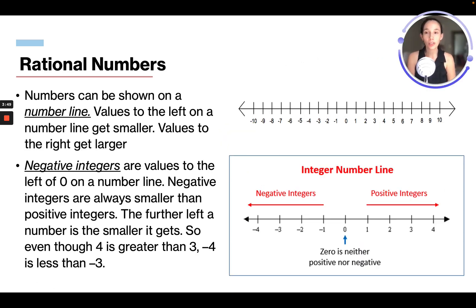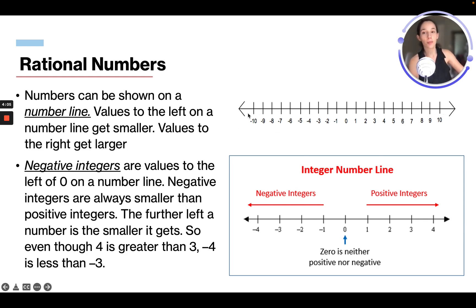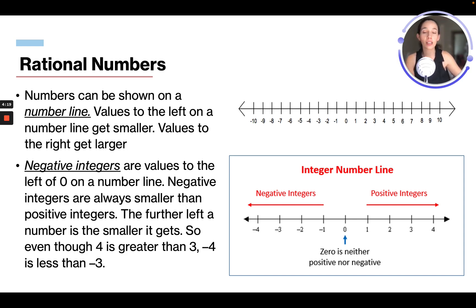Rational numbers can be shown on a number line. Values to the left of a number line get smaller and values to the right get larger. As the numbers move to the right they get bigger and as they move to the left they get smaller. There are also negative integers and positive integers. A negative integer is anything to the left of zero and a positive integer is anything to the right of zero. The further to the left a number is, the smaller it gets.